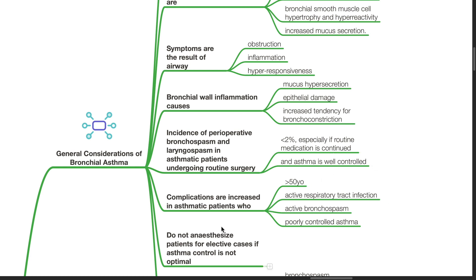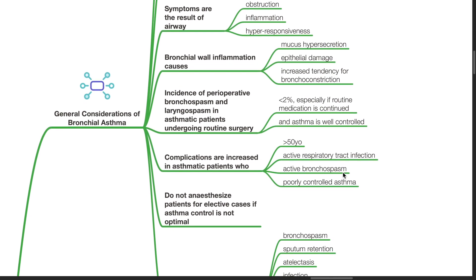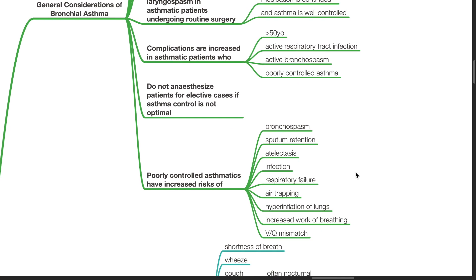Complications are increased in asthmatic patients who are more than 50 years old, have active respiratory tract infection, active bronchospasm and poorly controlled asthma. Do not anesthetize a patient for elective cases if asthma control is not optimal. Poorly controlled asthmatics have increased risk of bronchospasm, sputum retention, atelectasis, infection, respiratory failure, air trapping, hyperinflation of the lungs, increased work of breathing and V/Q mismatch.